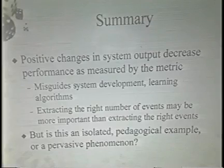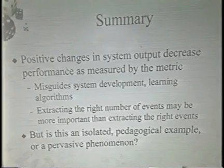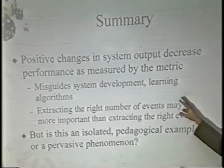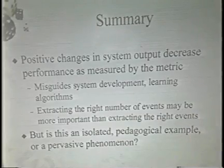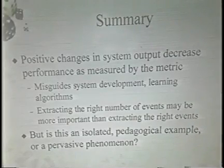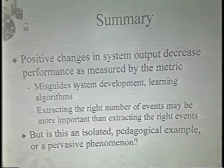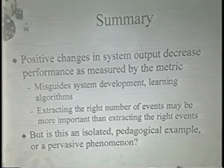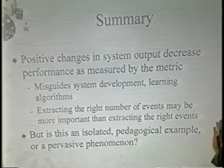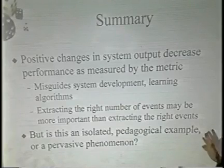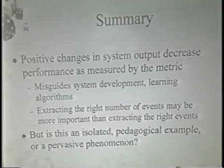This could have an effect both with hand-built systems in misguiding system development, and also with automatically trained algorithms. It seemed like for Muck — and this was supported by the merging experiments we did before — that what really mattered was that you do enough merging to get the right number of events. It mattered much less what the contents of those events were, because they would still typically get aligned with something and get some amount of score.